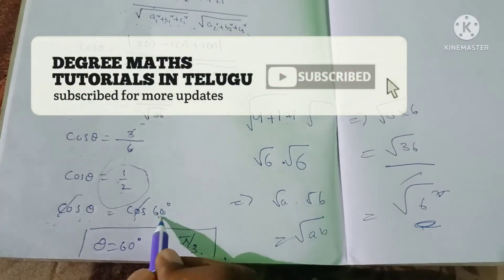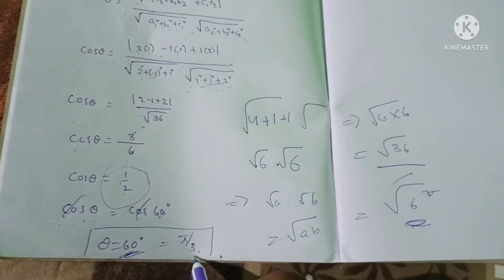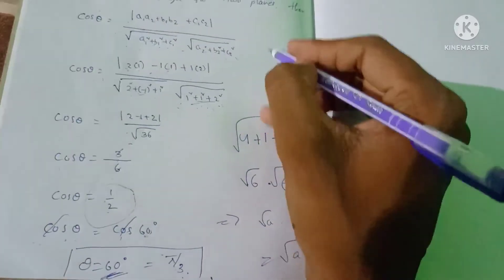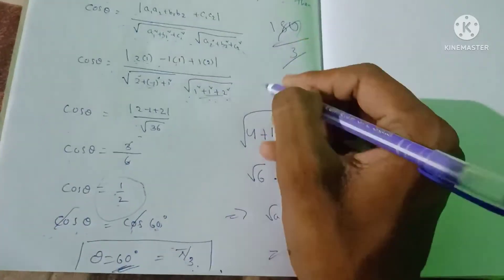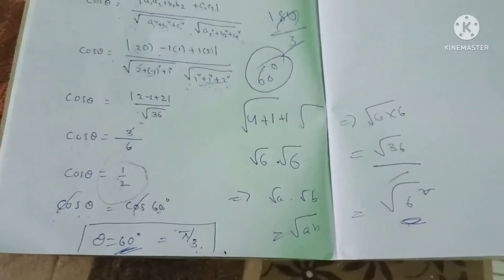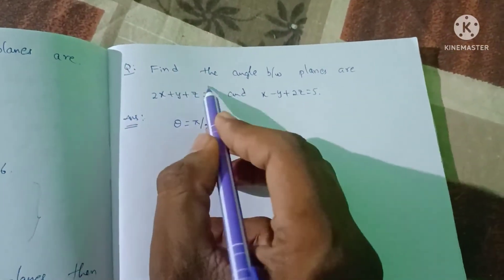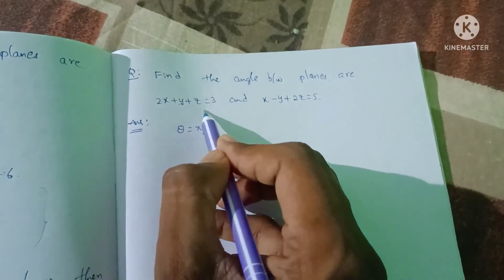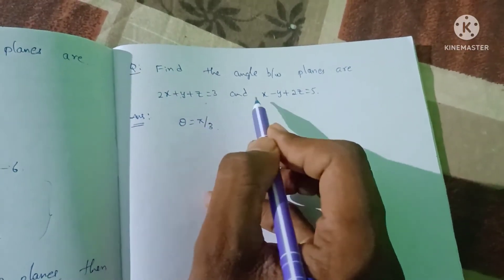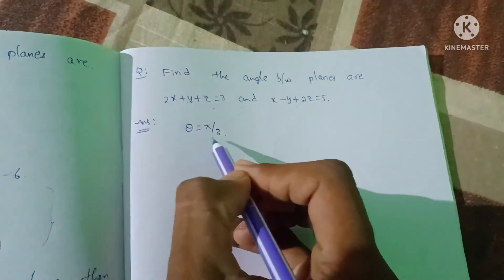Therefore theta = 60 degrees, which can also be written as π/3 radians (since 180/3 = 60°). So theta = 60 degrees. Here we have the second problem: find the angle between the planes 2x + y + z = 3 and x - y + 2z = 5. The answer is theta = π/3.